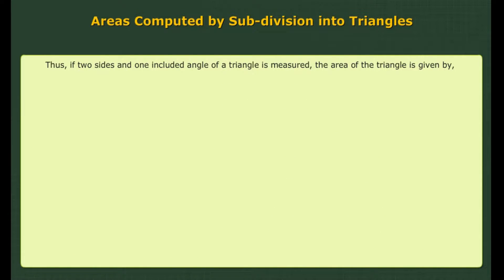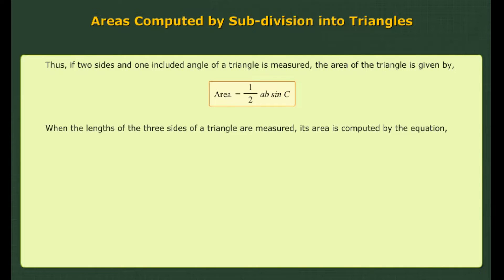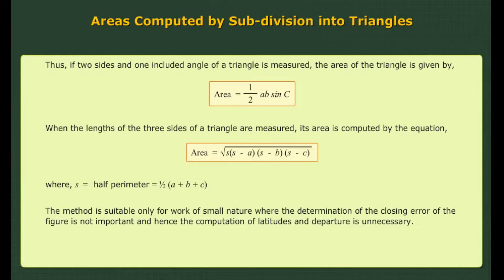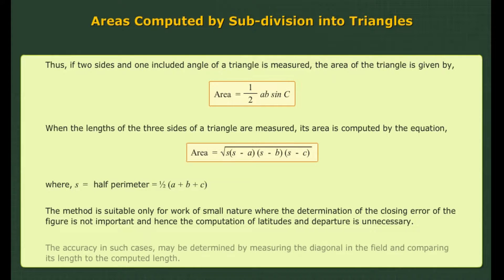If two sides and one included angle of a triangle are measured, the area of the triangle is given by the corresponding formula. When the lengths of the three sides of a triangle are measured, its area is computed by the equation where S is the half perimeter. The method is suitable only for work of small nature where the determination of the closing error is not important, and hence the computation of latitudes and departures is unnecessary. The accuracy may be determined by measuring the diagonal in the field and comparing its length to the computed length.